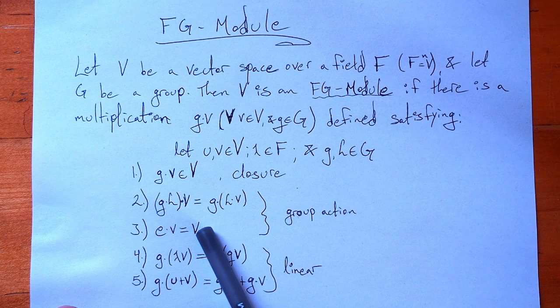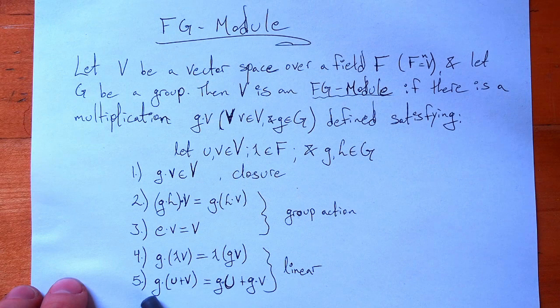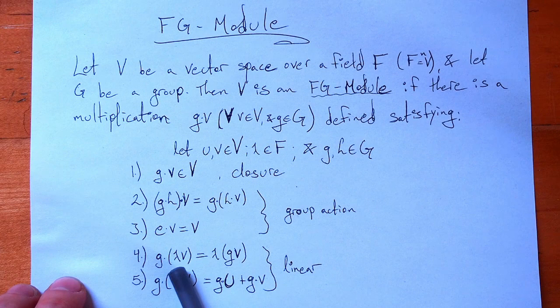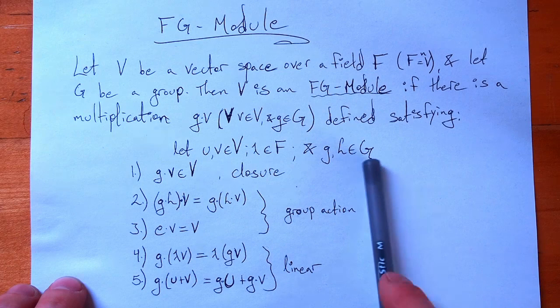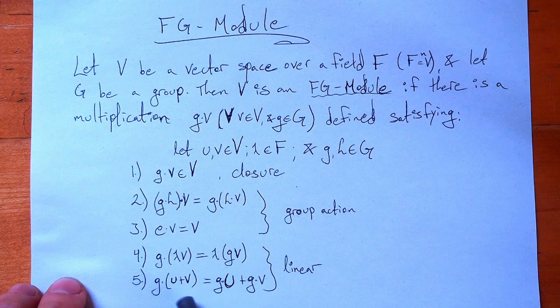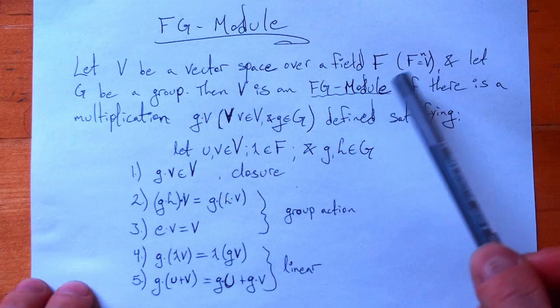The fourth and fifth properties guarantee that the multiplication is linear: we can pull scalars out — lambda is in the same field the vector space is over — and we have that the multiplication of a sum is the sum of the multiplication. If you have these properties, then we upgrade that vector space with that group to an FG module.